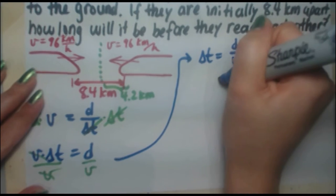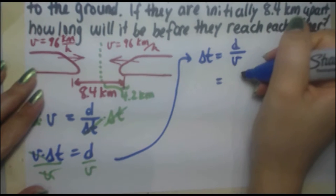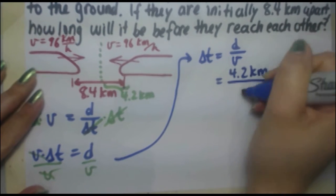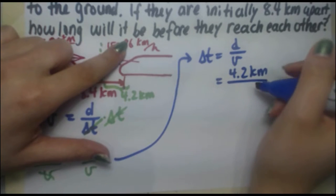Simple enough, right? If we set the D equal to the 4.2 kilometers, we set the speed equal to 96 kilometers per hour.